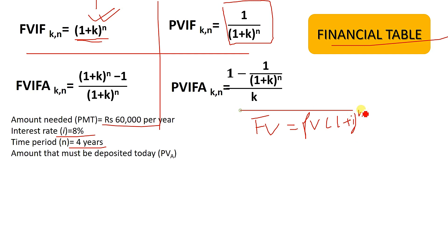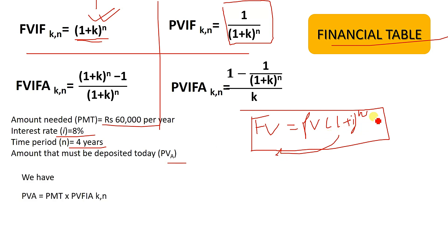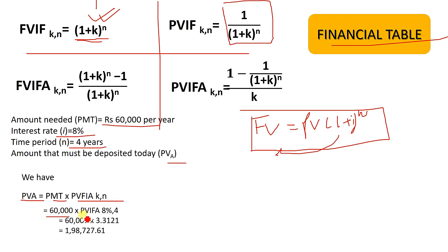Now for this question, we solve the equation. The value of an annuity equals Payment multiplied by PVIFA. The formula for PVIFA is 1 divided by (1 plus k) to the power n. The value of the annuity is Payment into PVIFA at 8% for 4 years.